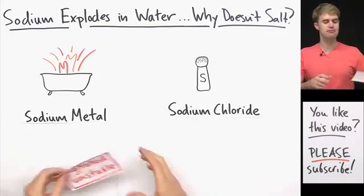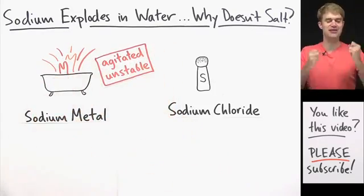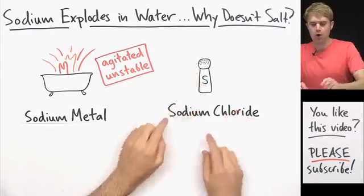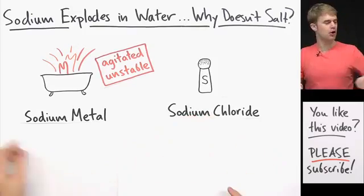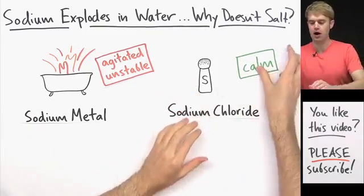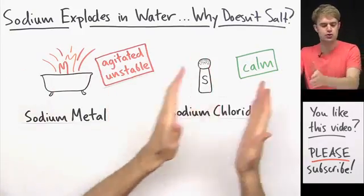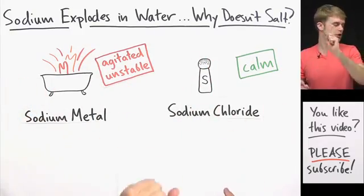The sodium atoms that make up sodium metal are highly reactive. They're agitated and unstable, super energetic. Whereas the sodium atoms that are part of sodium chloride are much calmer and much more relaxed. Here's how these two types of sodium atoms are different.